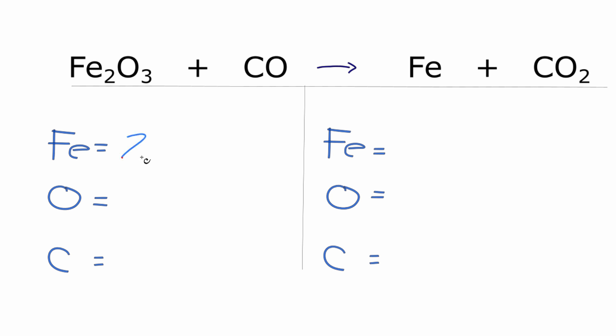We have two iron atoms. We have three oxygen atoms here plus the one here, so we have four oxygen atoms, and then we have the one carbon. On the product side, we have one iron, two oxygens, and one carbon.